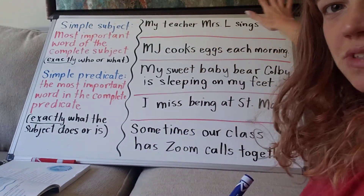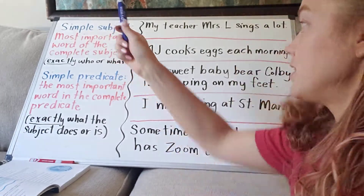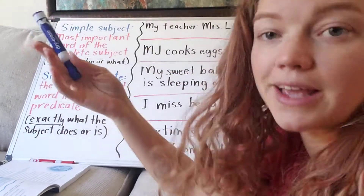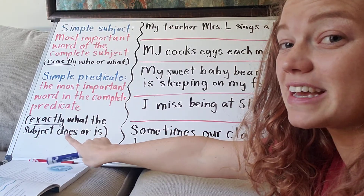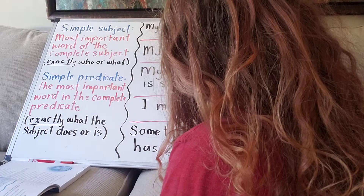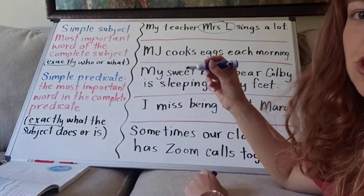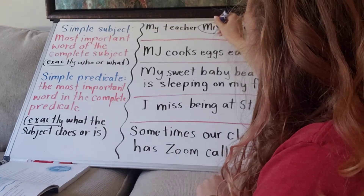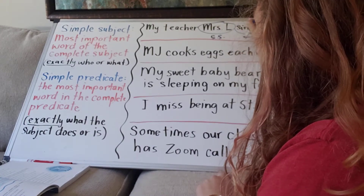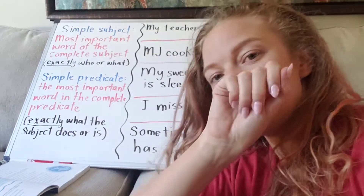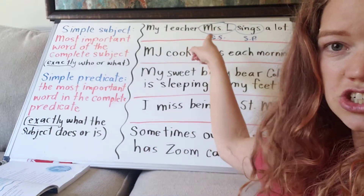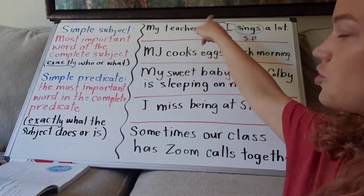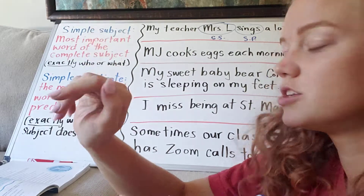Alright, let's look at the first one: My teacher Mrs. L sings a lot. The complete subject is 'my teacher Mrs. L' and the complete predicate is 'sings a lot.' But if I'm going down to the itty-gritty — exactly who and exactly what they're doing — the simple subject would be Mrs. L and the simple predicate would be 'sings.' Ordinarily in class we'd first underline the complete subject, double underline the complete predicate, then circle the simple subject and simple predicate.